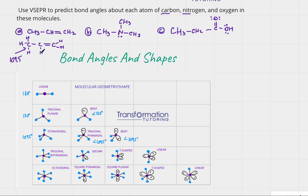For the next carbon, it's connected via a double bond — but we don't care whether the connection is single, double, or triple; we only care how many atoms it's connected to and how many lone pairs it has. This carbon is connected to three atoms, so the bond angle is 120°. The third carbon is also connected to three atoms, so it's 120° as well.